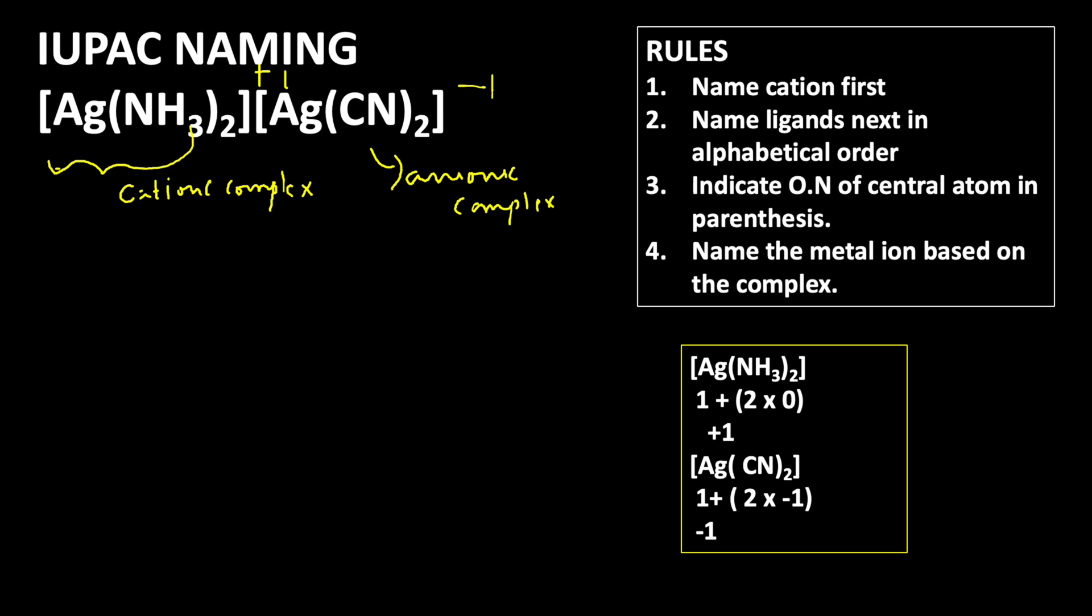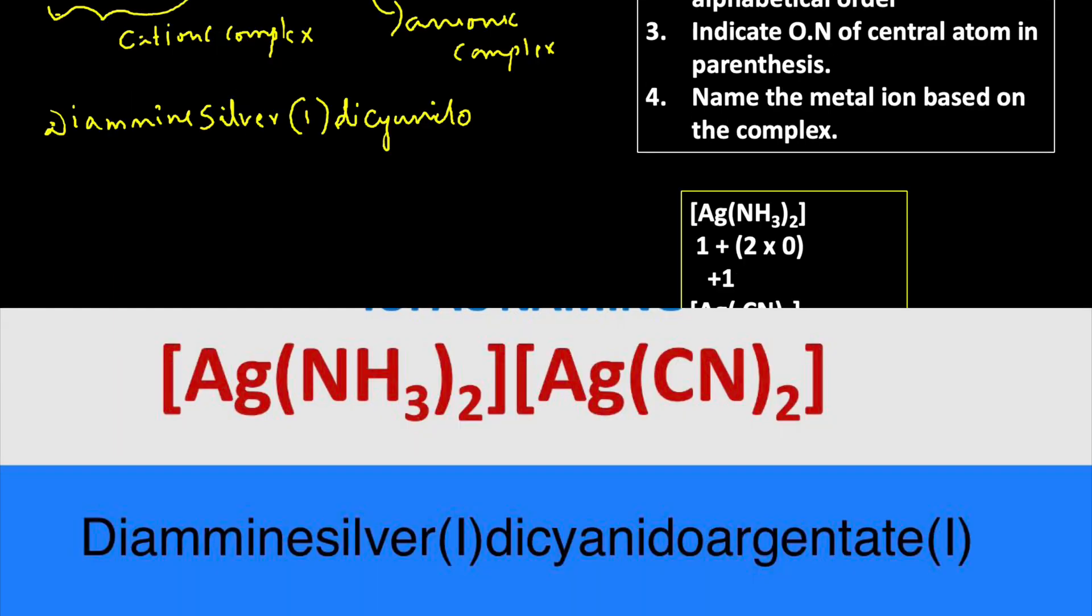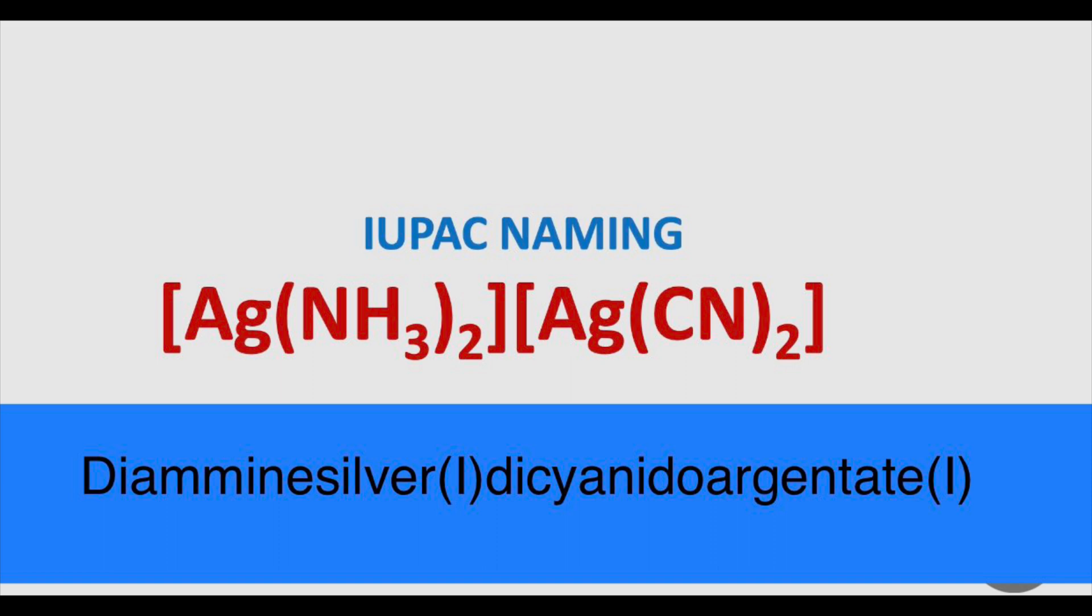We write first diamine because there are two NH3 groups present, so di prefix is used. Then silver - Ag, silver - and its oxidation state is 1. For the anionic complex, we start with dicyanido because it is an anionic ligand, so O should be used. Dicyanido. Then instead of silver, we use argentate (the Latin name), argentate(1). So diamminesilver(1) dicyanidoargentate(1) is the IUPAC naming of this compound.